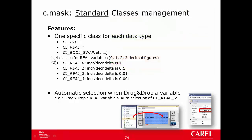There is an exception for the real variable: there are four classes where the only difference is the increase/decrease rate, which is the behavior of the up/down keys. For example, for class real 2, the increase/decrease rate is 0.01 because there are two decimal figures. In the standard classes there is no specific way to show numbers, nor a specific function for the other keys.